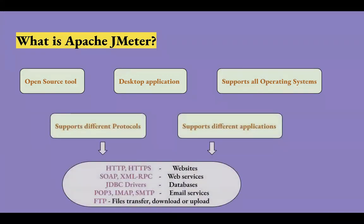JMeter works at the protocol level, meaning it communicates with applications based on protocols. Protocols are basically a set of rules to establish connection between different devices for the exchange of data. They determine how data will be transmitted over the network — the secured medium used to transfer data from sender to receiver is called a protocol in the networking world.